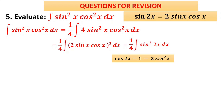Note the pattern: sin²x = (1 − cos 2x)/2; sin²2x = (1 − cos 4x)/2; sin²3x = (1 − cos 6x)/2 — it is a multiple of the angle. So sin²2x = (1 − cos 4x)/2.